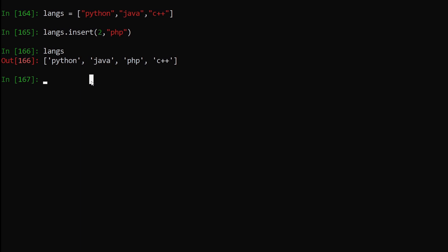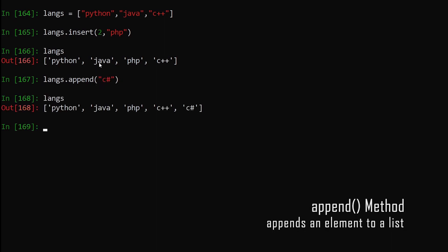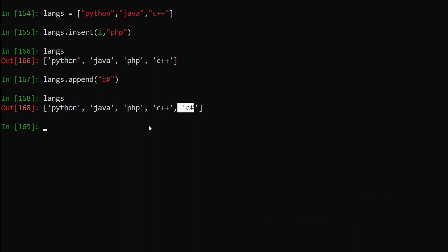Now let's say I want to add an element at the end of my list. There's a specific method called append that we can use for this. So we say lengths.append() and give it the element we want to append — let's say 'c sharp'. If I hit enter and print out the list, you can see we have added 'c sharp' at the end of our list.